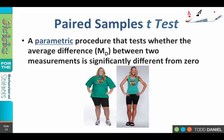The paired samples t-test is a parametric procedure because the sample is drawn from a population. Here, we are interested in whether the average difference between two measures is significantly different from zero.